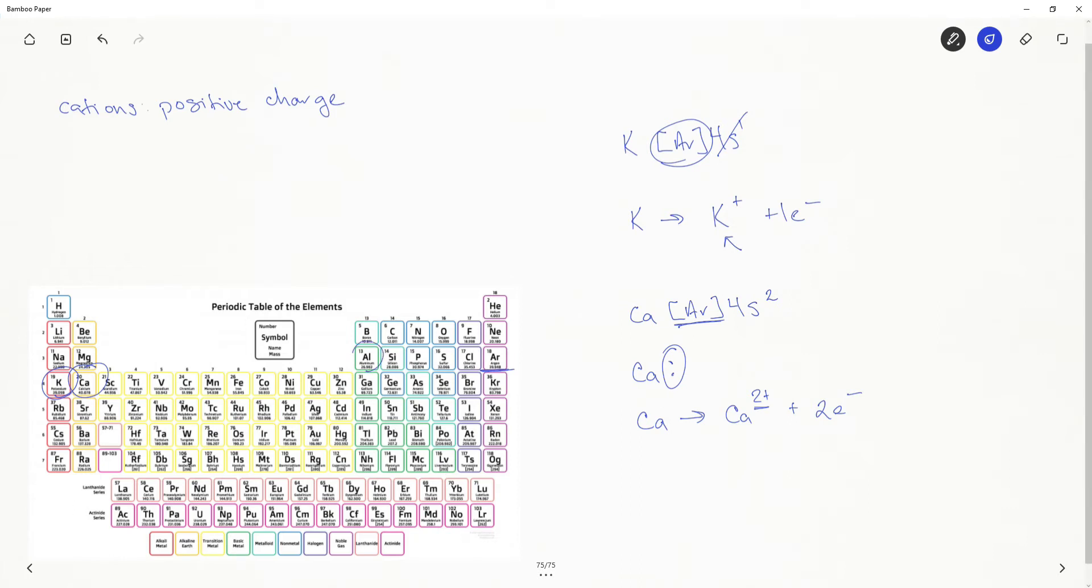So now you can probably predict what would happen with aluminum. Aluminum's electron configuration and aluminum's Lewis structure: three valence electrons. It would like to lose all three of those electrons. And when it does so, it will have a positive three charge.